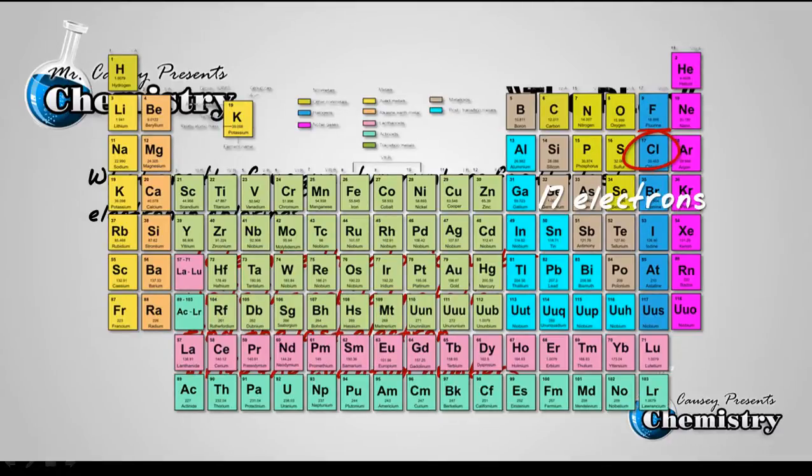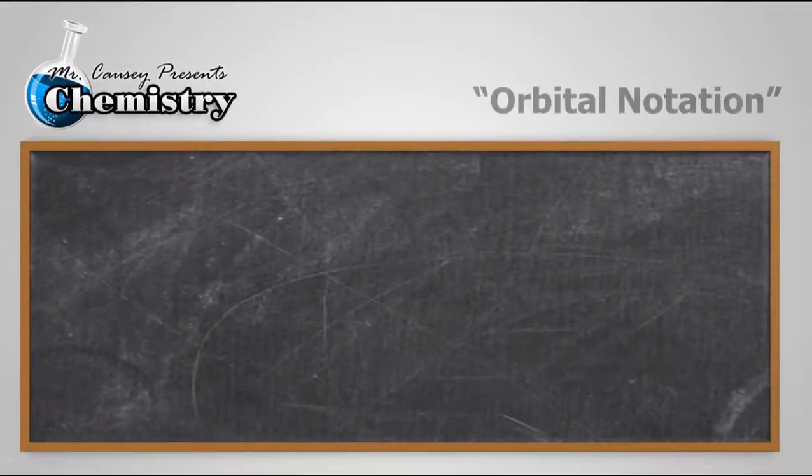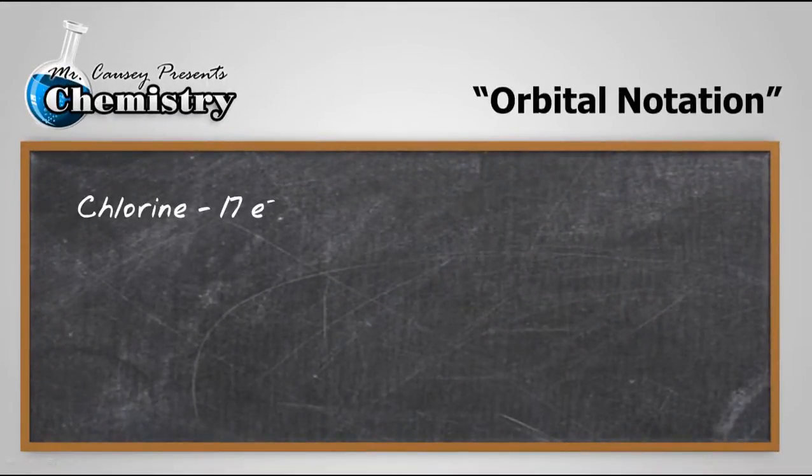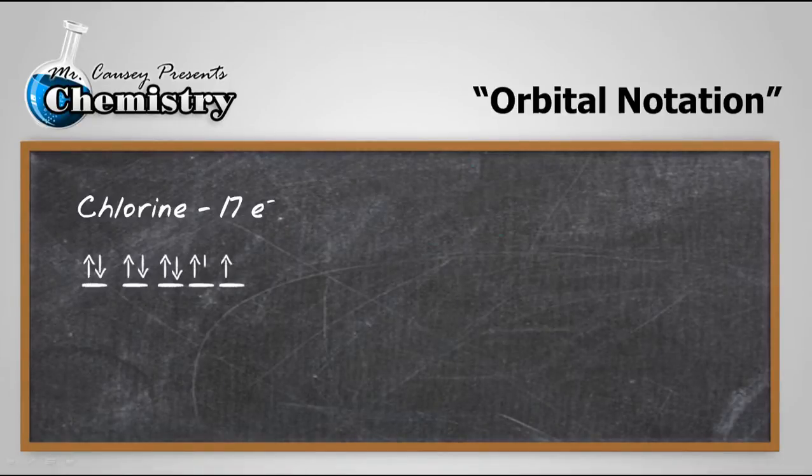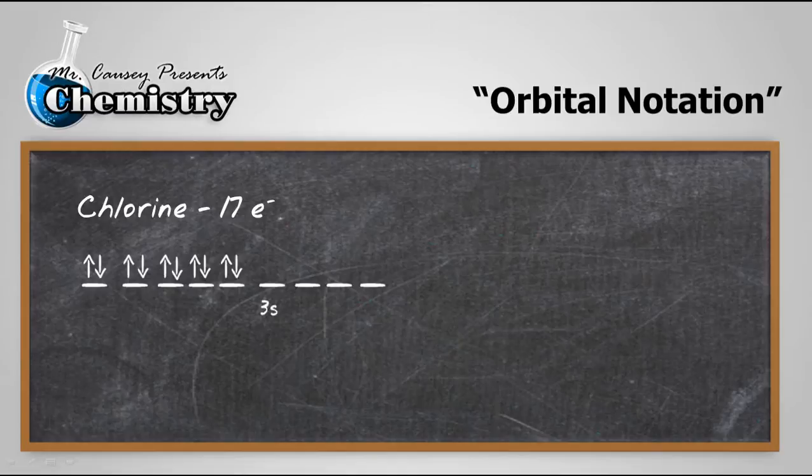All right, let's go to the magic blackboard. And the orbital notation for chlorine, well, we know it has 17 electrons. So let's go ahead and write it out. And there we go. There's the first 10 electrons. And let's do the third energy level.